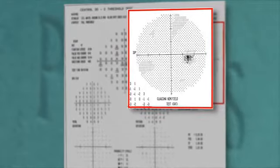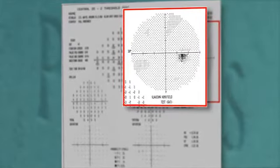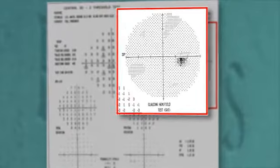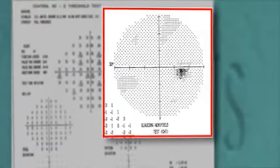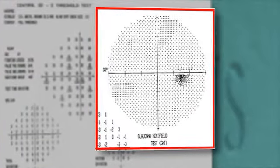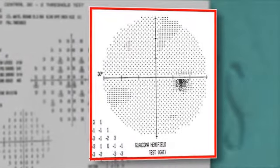You'll notice there'll also be a blind spot, and that will be a little dark area on this right eye field off to the right and below the horizon. That's a normal blind spot, and that's really important to test.